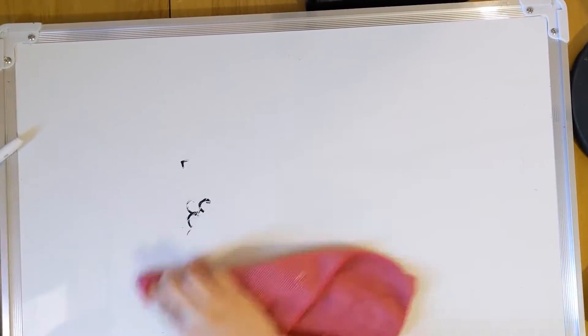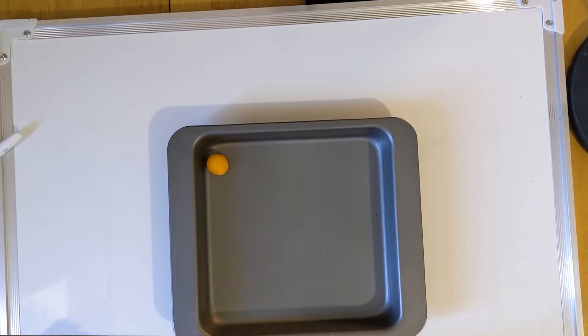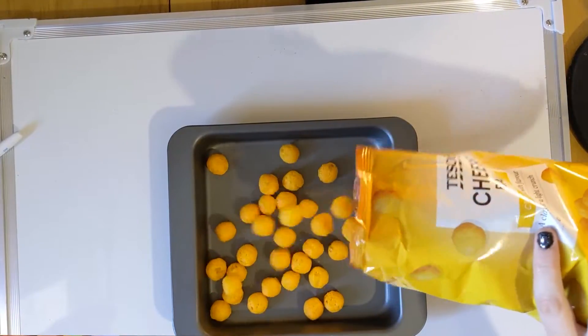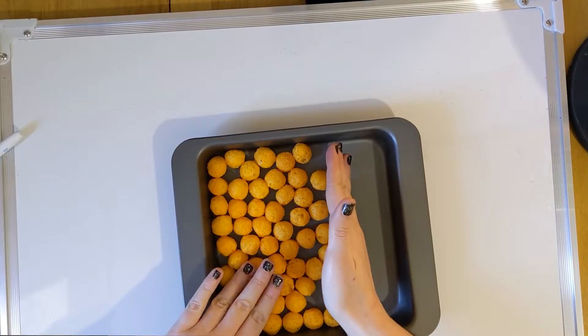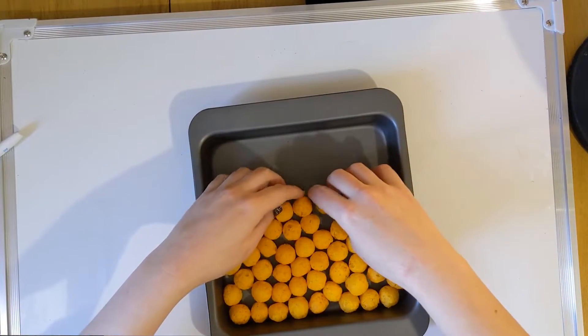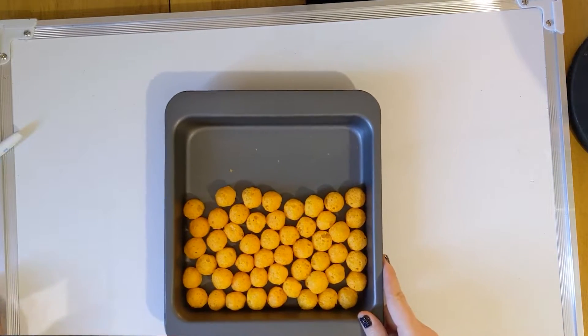Now we're going to start talking about what happens in terms of energy. To do that, I'm going to introduce you to one of my favourite snacks — cheese balls. The best thing about them is they are spherical, so you can use them to model particles. If I fill up my baking tray with some cheese balls and sort of put them all to one side, you can see they're modelling what the particles will look like in a solid.